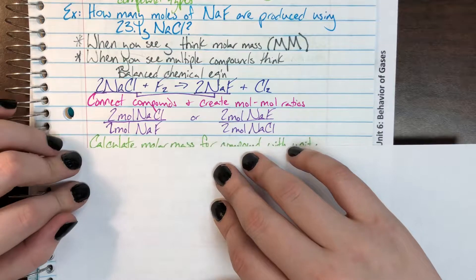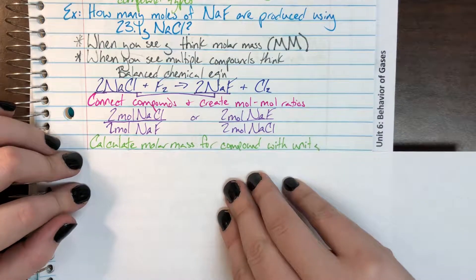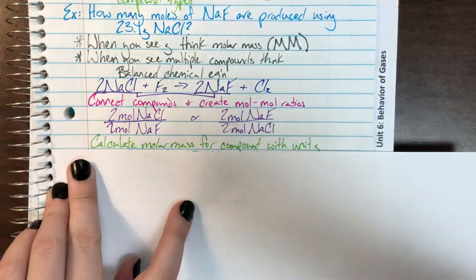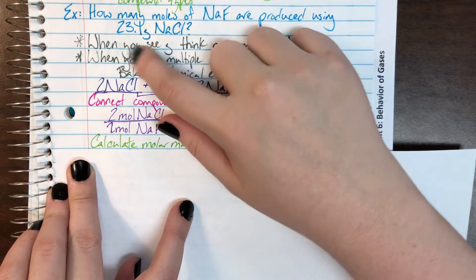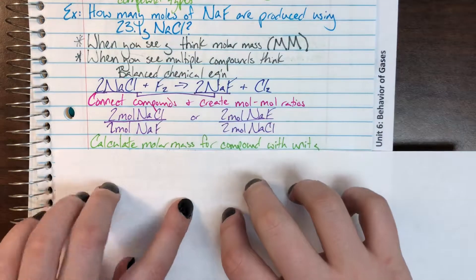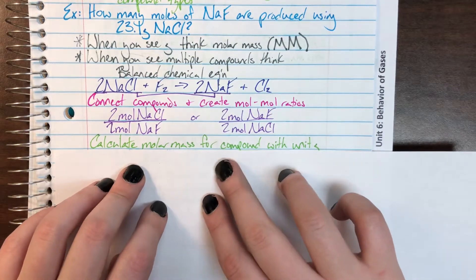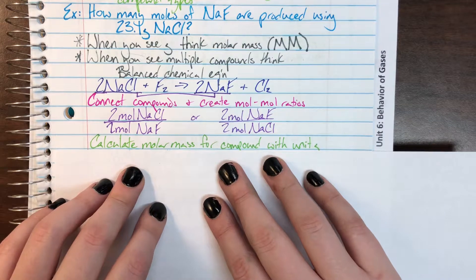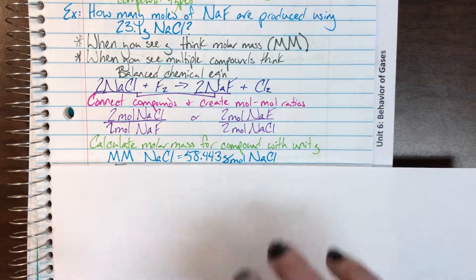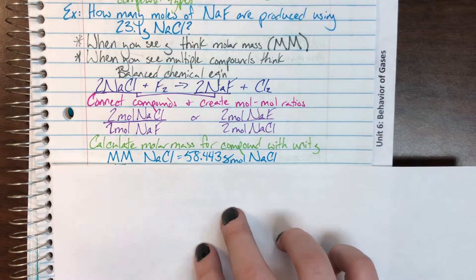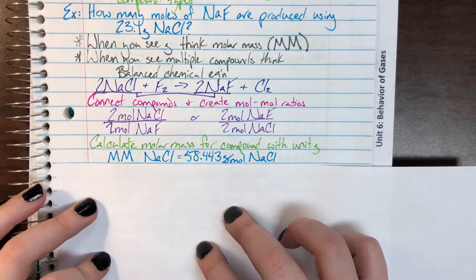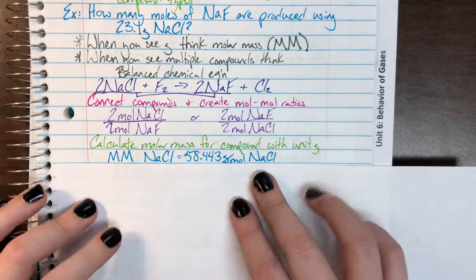We need to figure out that molar mass for the compound that was given to us in the wrong units. Here we have sodium chloride and it's given in grams. Our number given is in grams, which means that we need the molar mass of sodium chloride. I went ahead and calculated that off screen. The molar mass of sodium chloride is going to be 58.443 grams per mole sodium chloride.